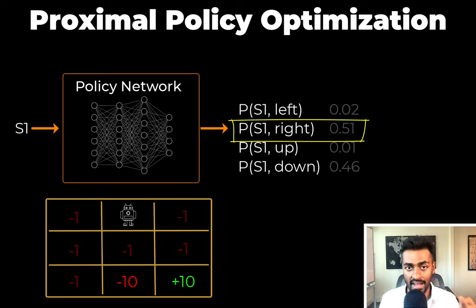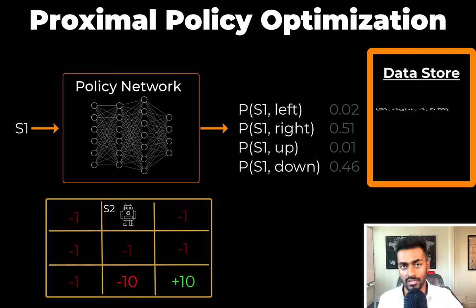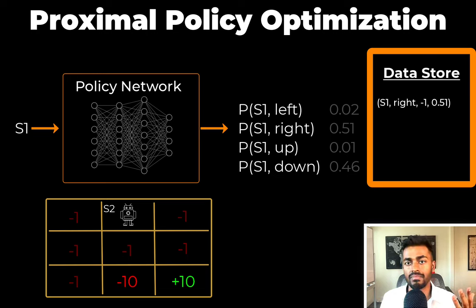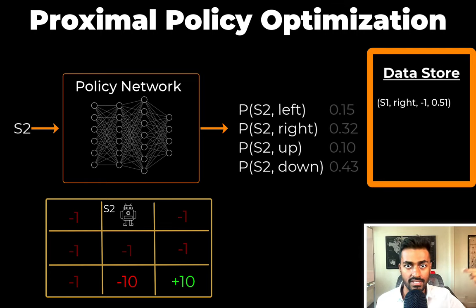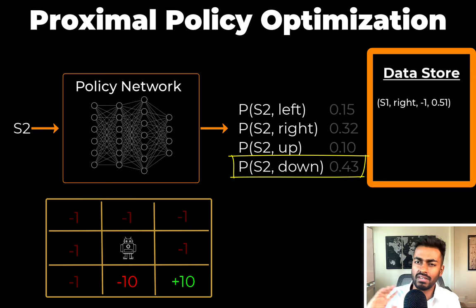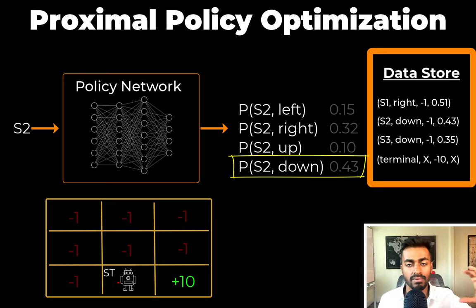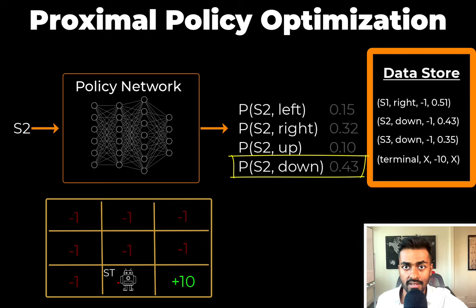Frank then takes that next action and receives some reward. We then store the quadruple of the state, action, reward, and action probability into a data store. This information will be useful when training the policy network and the value function network. We repeat this sequence of steps for the episode or some fixed number of time steps within the episode. Now we have data stored in this episode as a batch, and we can collect multiple batches if we choose.